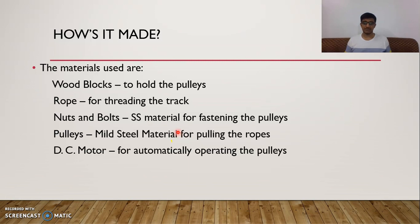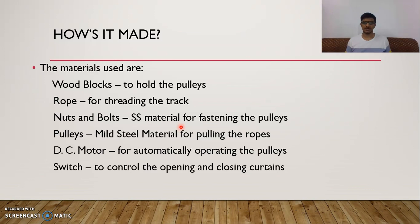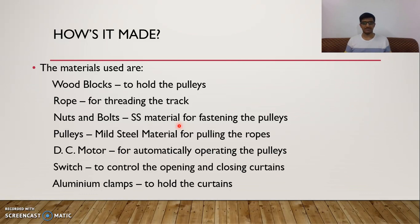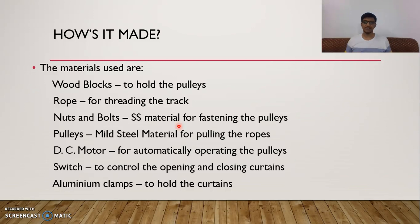We are using a DC motor for clockwise and anti-clockwise rotation of the wheel, and a switch to control the opening and closing of the curtains. Lastly, we are using aluminum clamps. These clamps are used to hold the curtains intact. The curtains in everyday life are connected to a rod, so we are connecting the aluminum clamps to the curtain but not to the rod. A simple explanation: we use similar clips in everyday life to dry clothes and prevent them from flying. The same way, we are using aluminum clamps to hold the curtains.